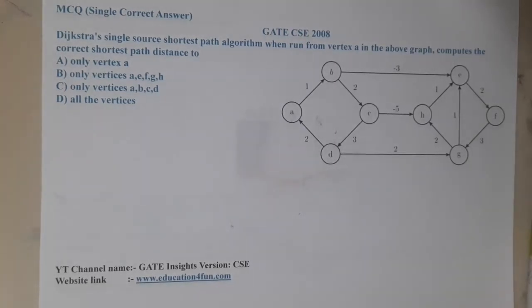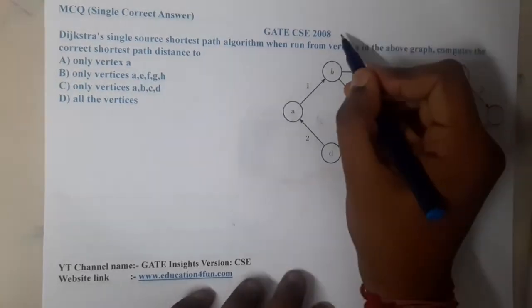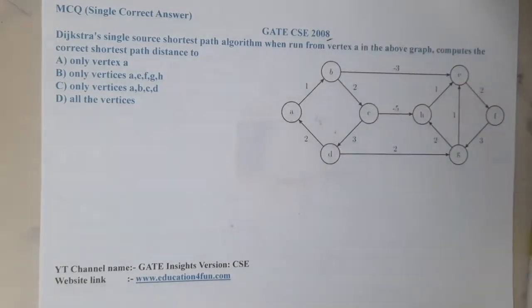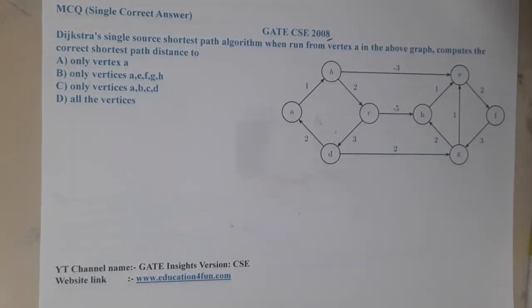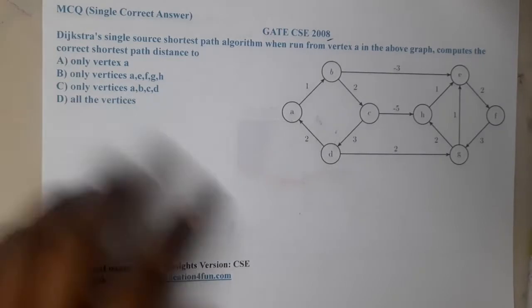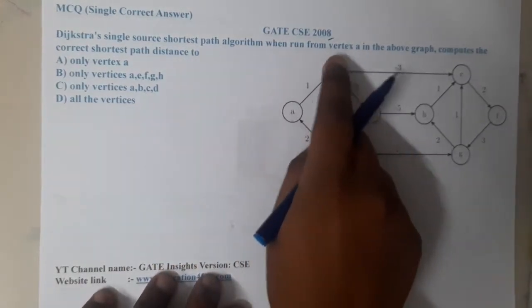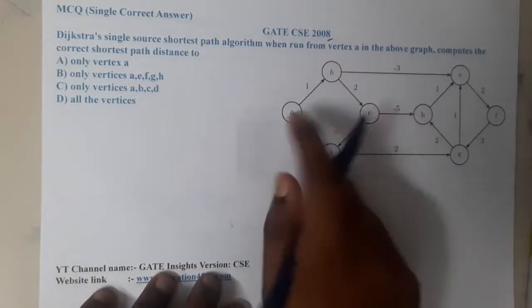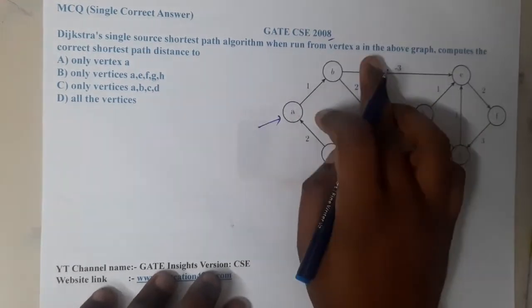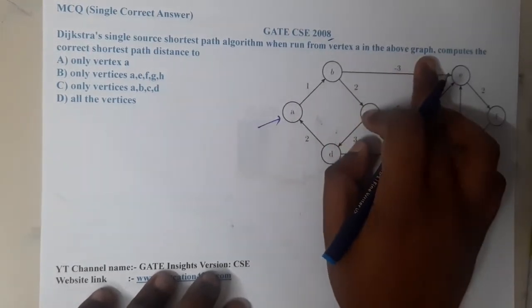Hello guys, we are back with our next lecture. In this lecture, let us go through the next question. This question belongs to GATE CSE 2008. The question is: Dijkstra's single source shortest path algorithm when running for vertex a in the above graph, computes the correct shortest path distances to...